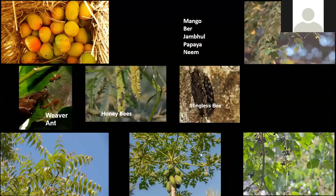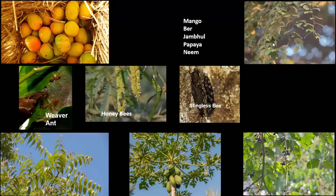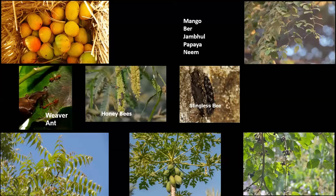In our orchards we have mangoes, ber — that is Ziziphus — jamun, and papayas. If you love to enjoy these fruits, you should thank the lovely insects doing their job as pollinators: honeybees and stingless bees. Stingless bees do the pollination of mango specifically, so we should all be thankful to them. You will also come across weaver ant colonies in any mango orchard — they give you a very unpleasant experience but are part of the ecosystem.